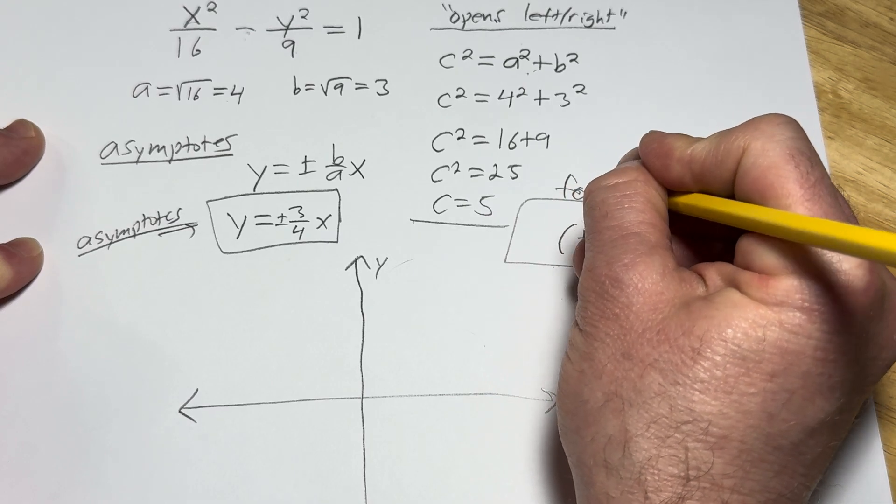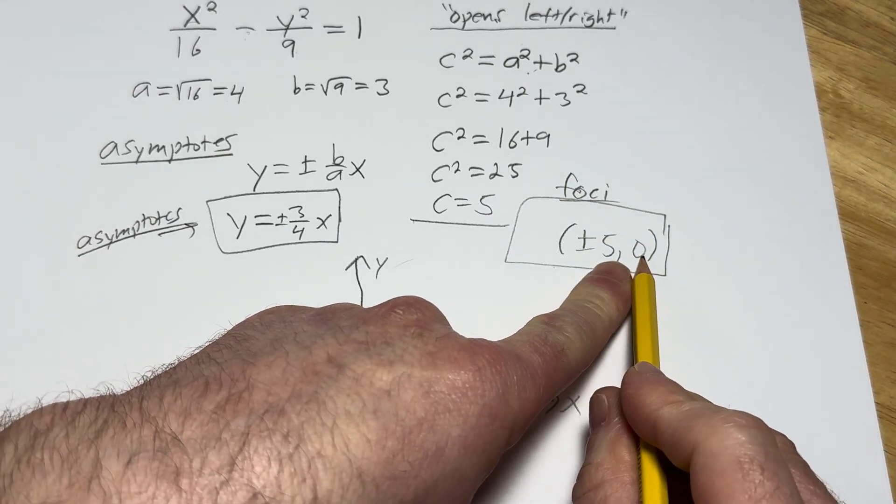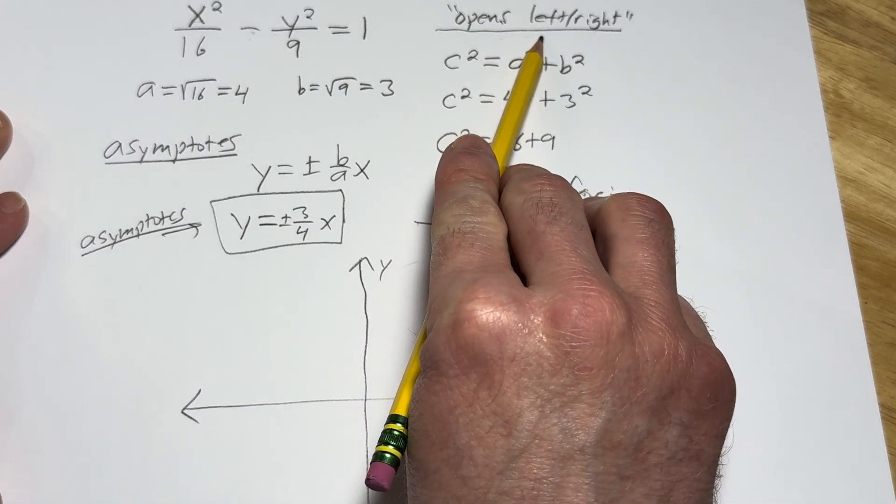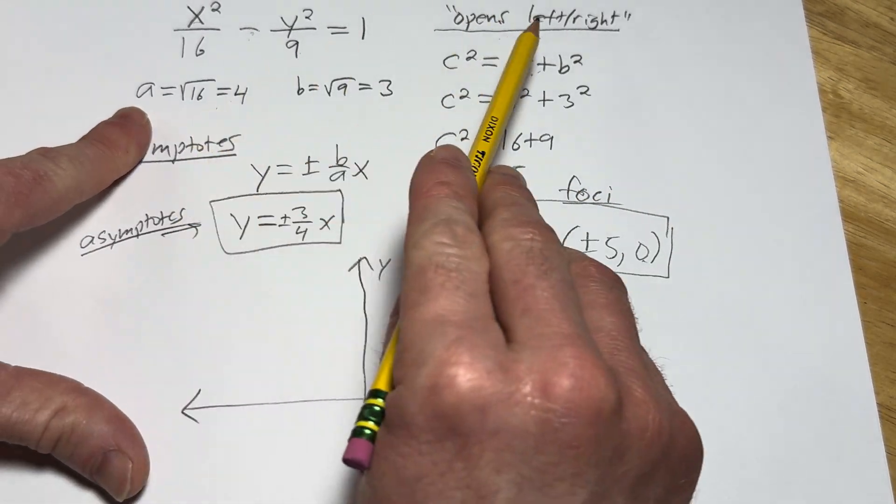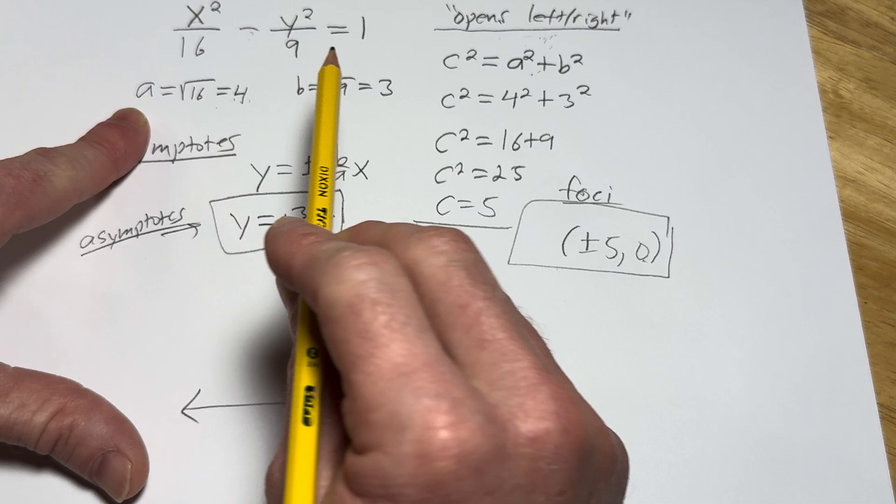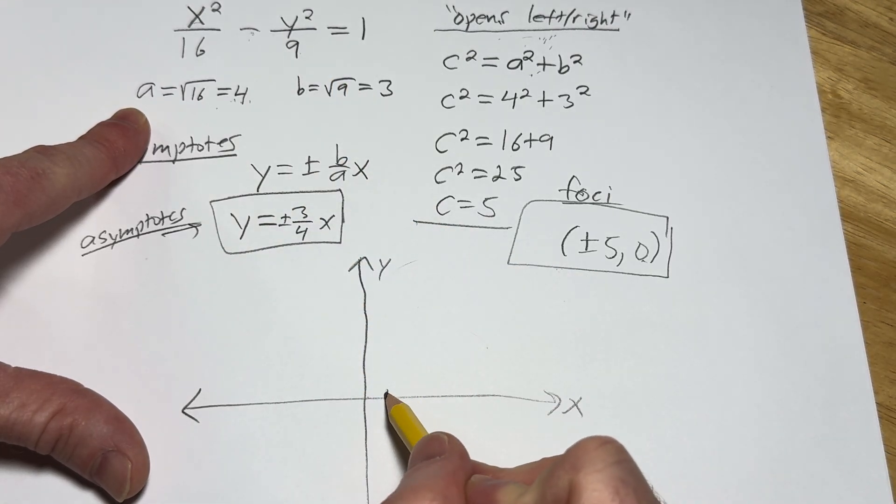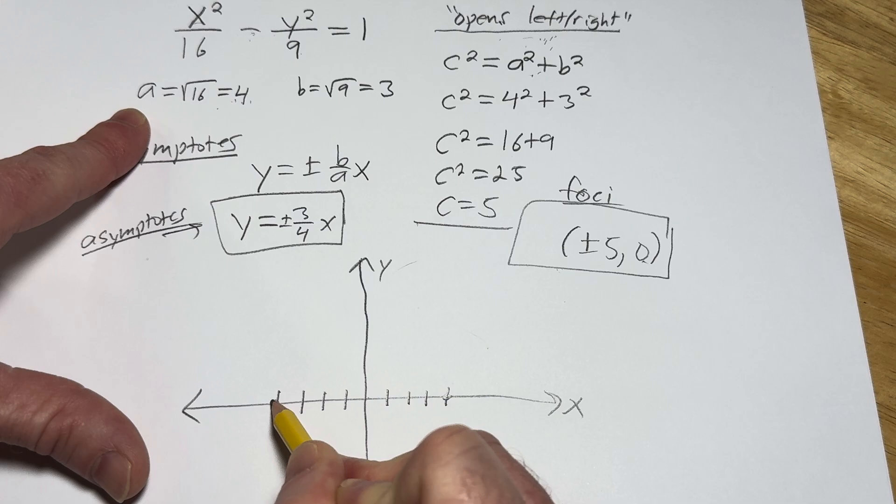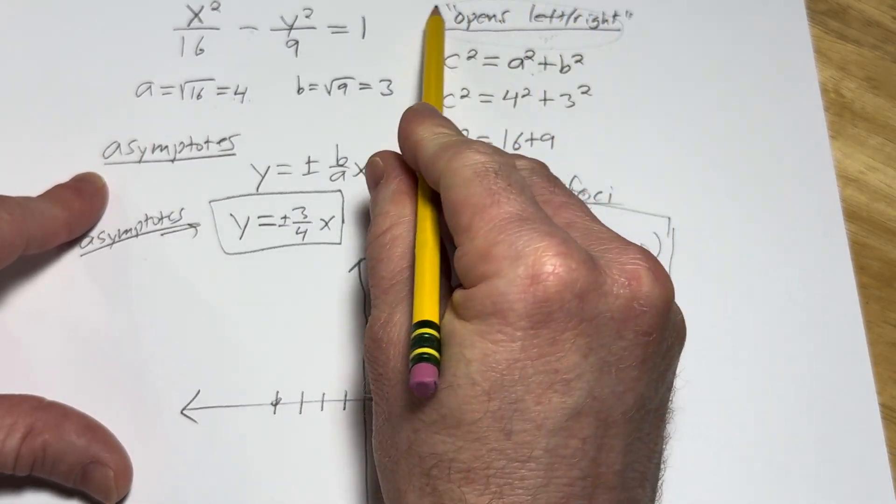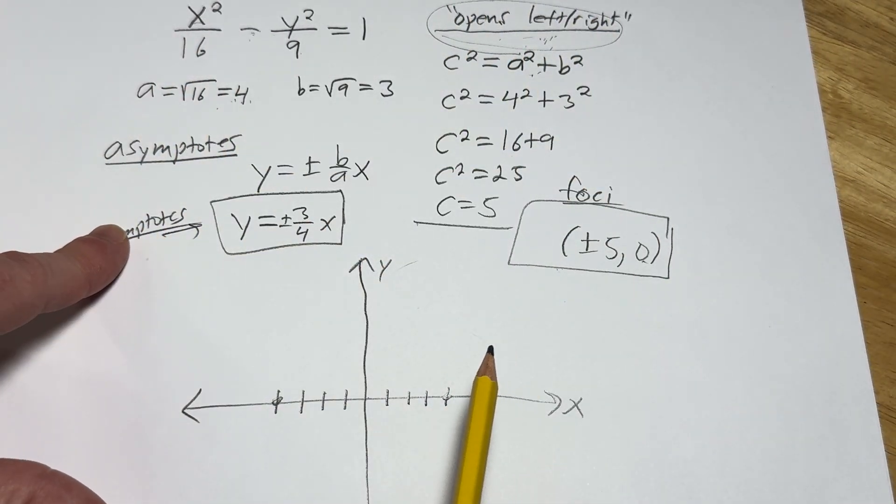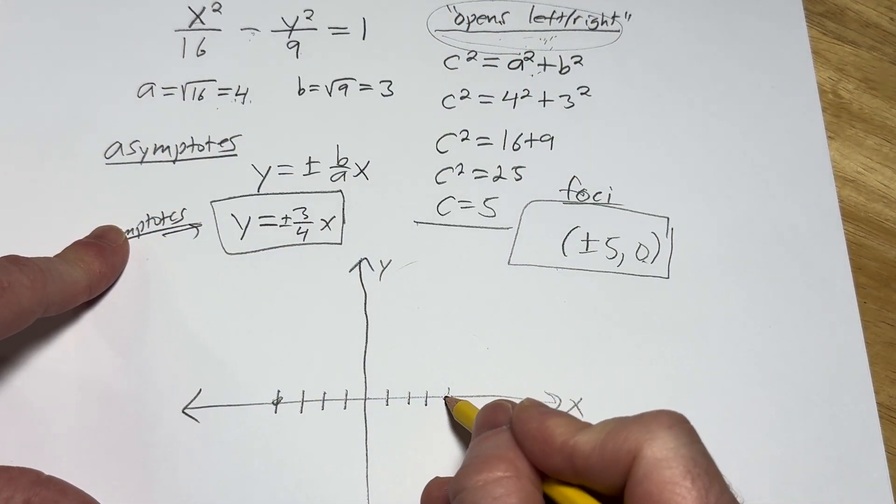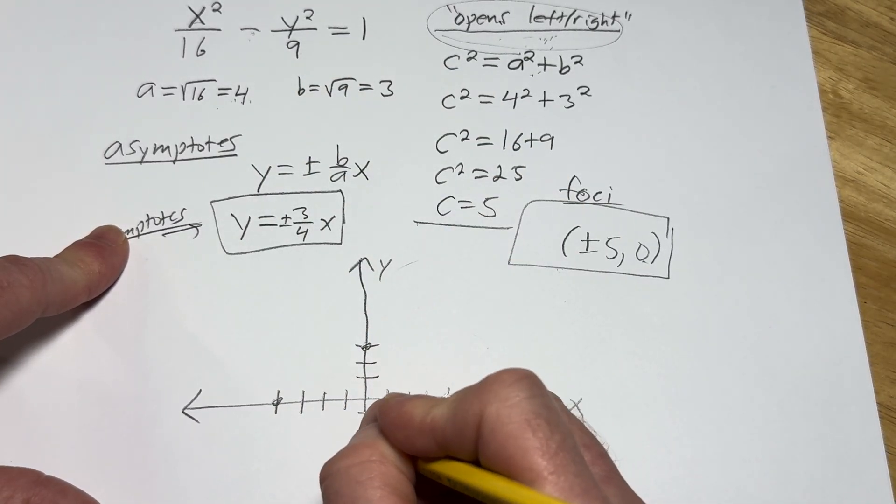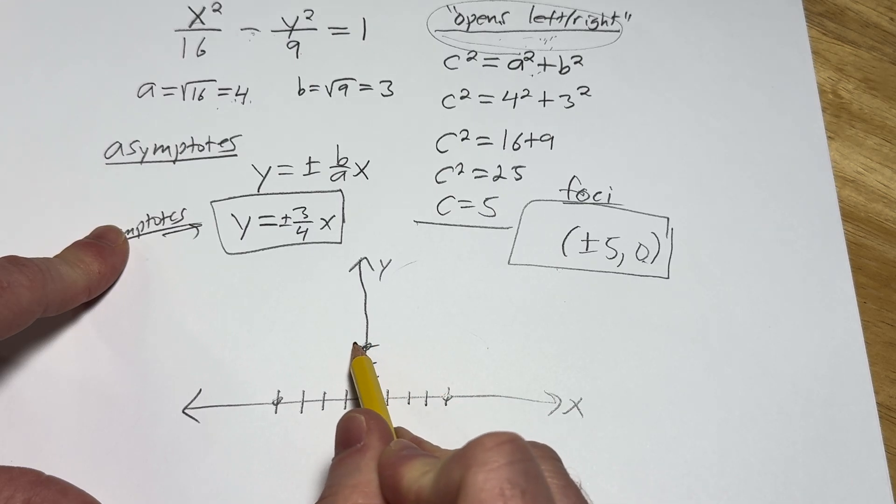Probably should have waited, but we're going to come back because sometimes the plus or minus 5 is here, and that's key. So it opens left and right. That's important. So because it opens left and right, you go left and right by A from the center, which is 0,0. So 1, 2, 3, 4 and 1, 2, 3, 4. That's because it opens left and right. If it opens up and down, you go up and down by A. Now you go up and down by 3.